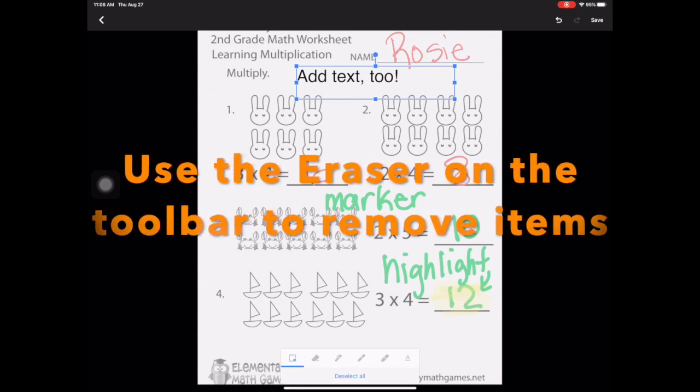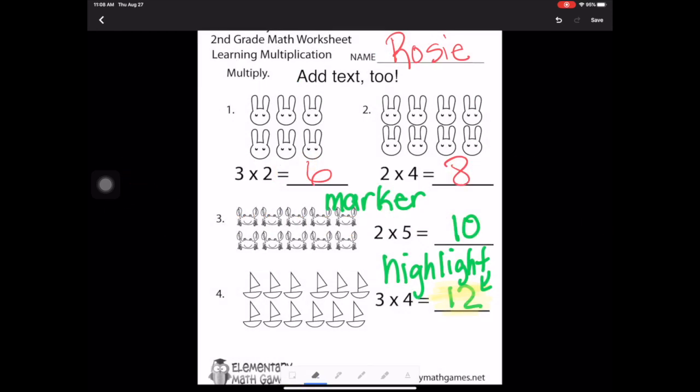On the toolbar, you'll also find the eraser tool. Tap that and then tap any object that you want to remove. Don't forget you have an undo button at the top right to bring those things back.